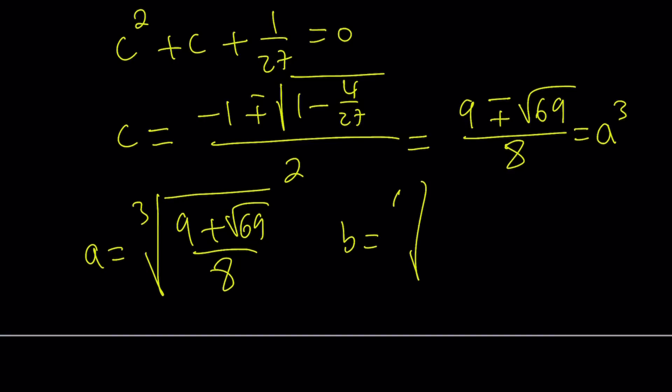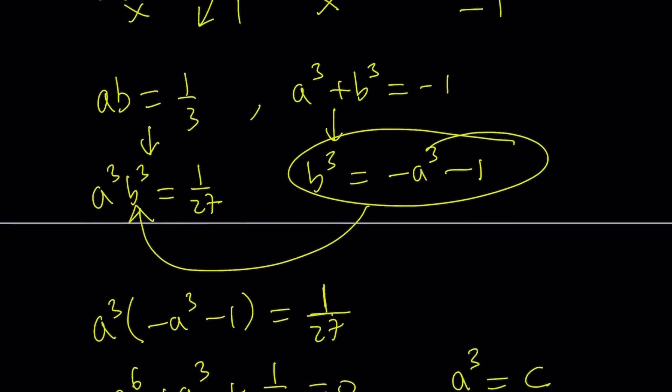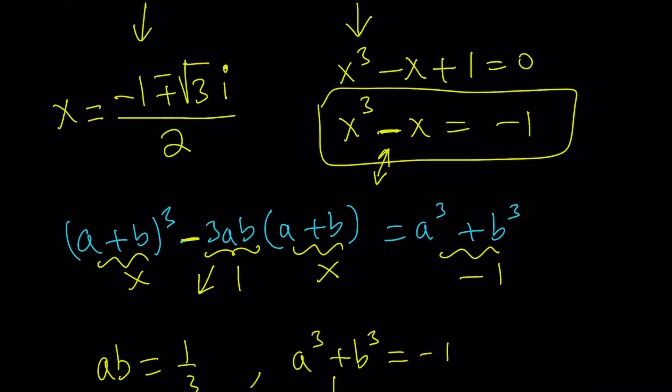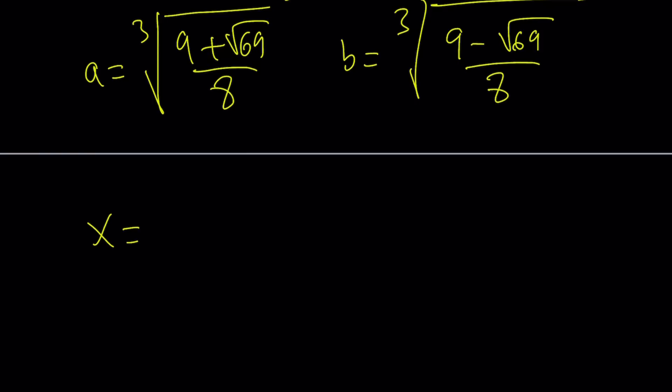Remember, x is equal to a plus b. Is it x? Okay, x is equal to a plus b. So x equals the sum of these two nice quantities. It's this one plus this one. How nice, right? So that's the solution that we get from here.